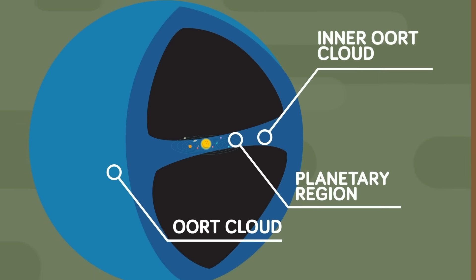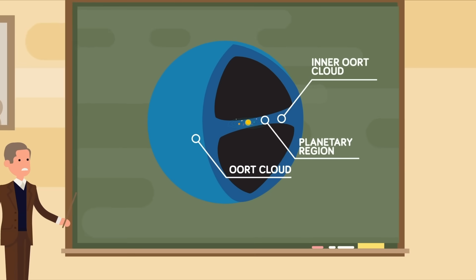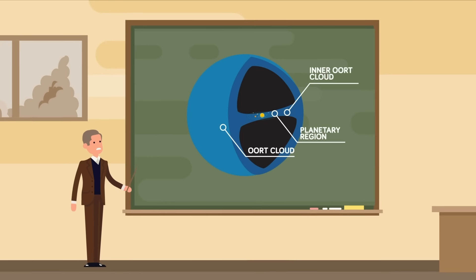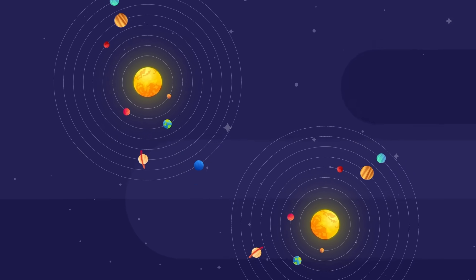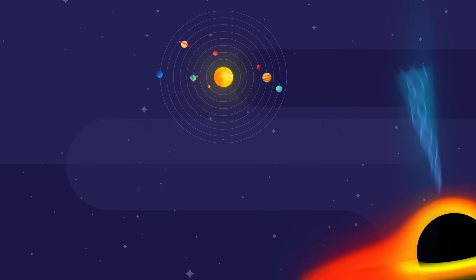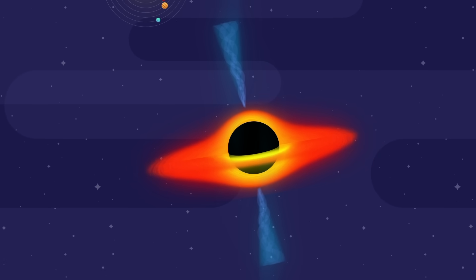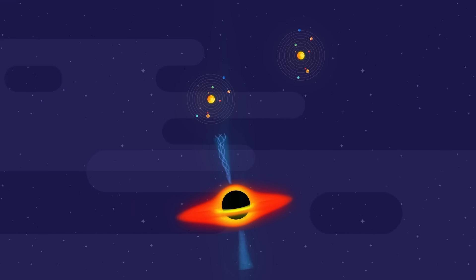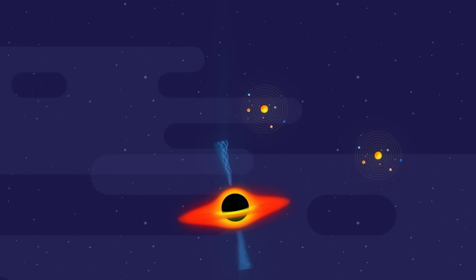Some of these objects, however, are also believed to be intergalactic in origin, captured once more by the sun's gravity field. Scientists even believe that our solar system regularly swaps material with other solar systems as we drift past each other in our orbit around the giant black hole at the center of our galaxy.